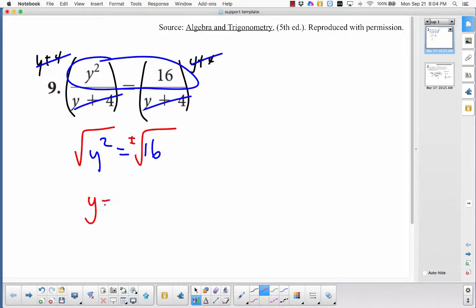So the left I get y is equal to, the square root of 16 is 4. So a plus or a minus 4.